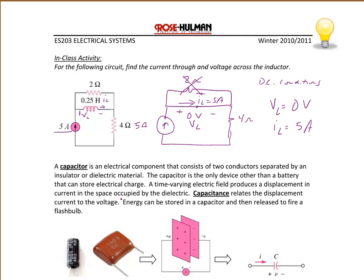Now let's introduce a capacitor. A capacitor is an electric component that consists of two conductors separated by an insulator or dielectric material. It is the only device other than a battery that can store electric charge, and it stores energy in the form of voltage. A time-varying electric field produces a displacement current in the space occupied by the dielectric, so capacitance relates the displacement of current to the voltage — it is also a differential relationship. The circuit symbol we will use has current I through it, voltage V across it, and C representing capacitance measured in farads.